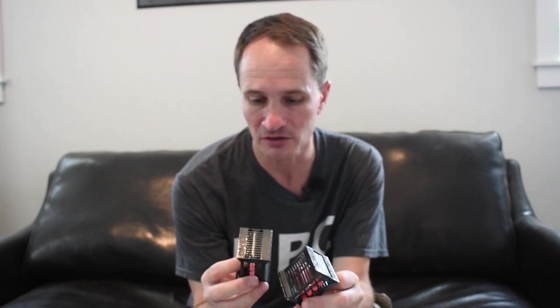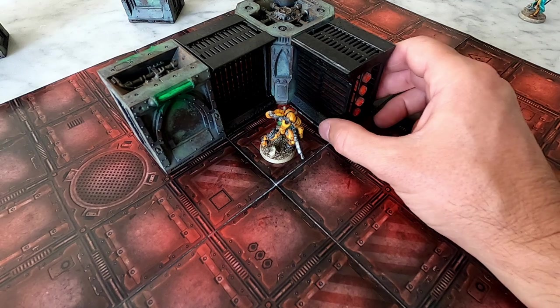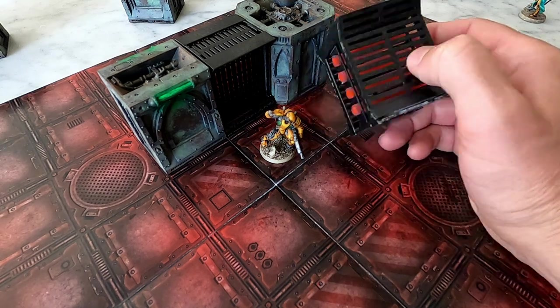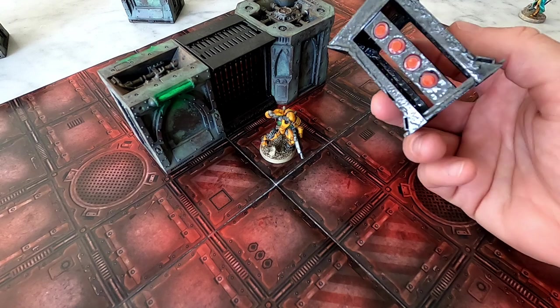I made something I wanted to add to my Necromunda Zone Mortalis, Zone Mechanicus stuff to make some kind of generic sci-fi hallway pieces. I used aquarium filters, I used styrene. I laser cut some styrene, and I'll get into that more later.